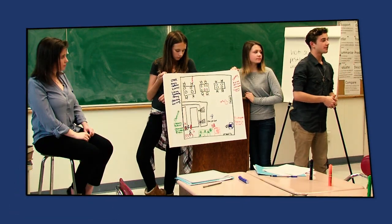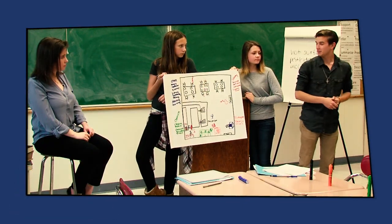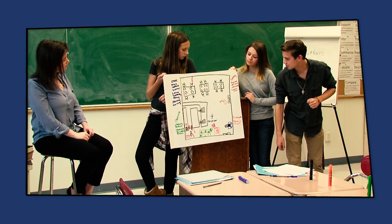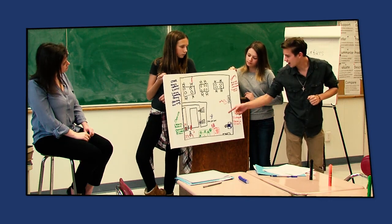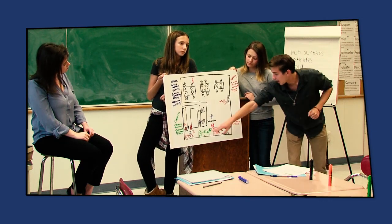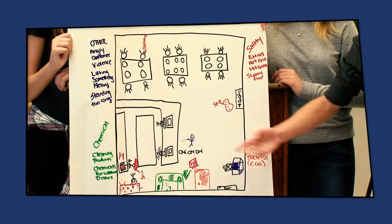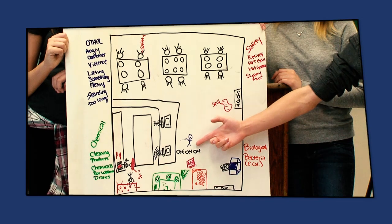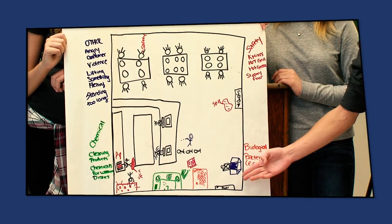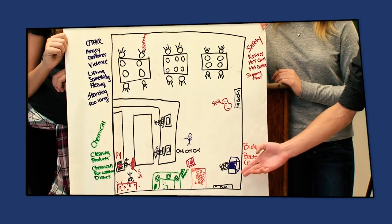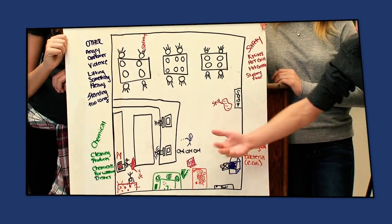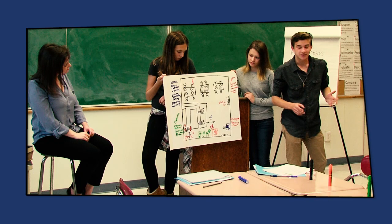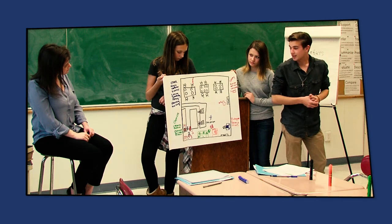Our work site was a fast food restaurant. Some of our safety hazards: we have knives, a hot grill, hot grease, and a slippery floor. When they've finished, have each group select someone to present their workplace to the class and discuss their presentation.